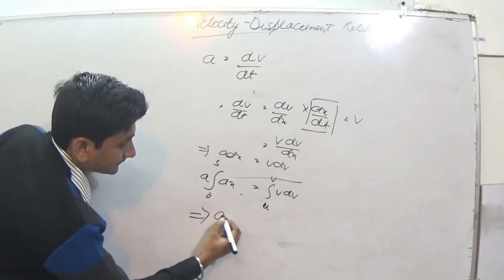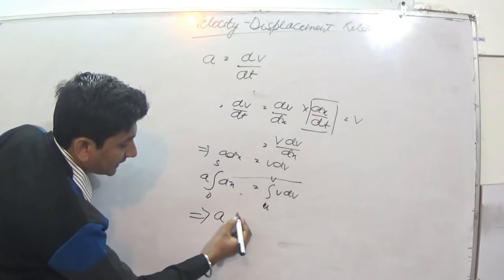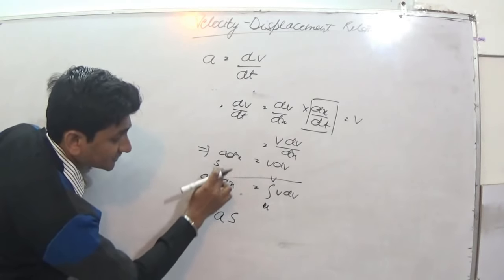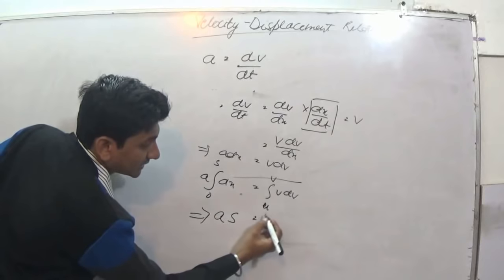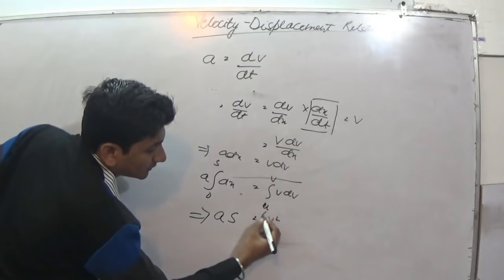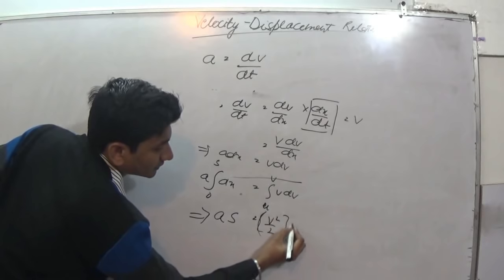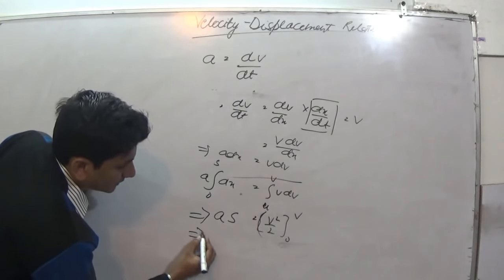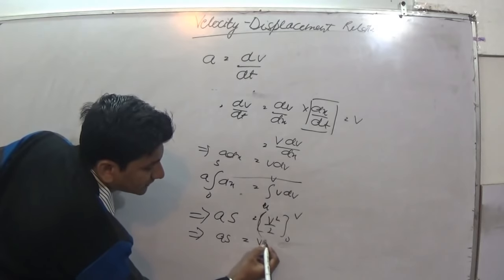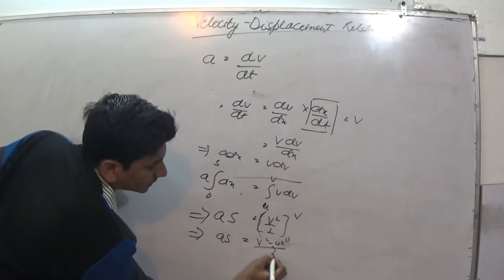It becomes as, as 0 to s. On solving, it will become this: v square by 2, u to v, implies as is equal to v square minus u square by 2.